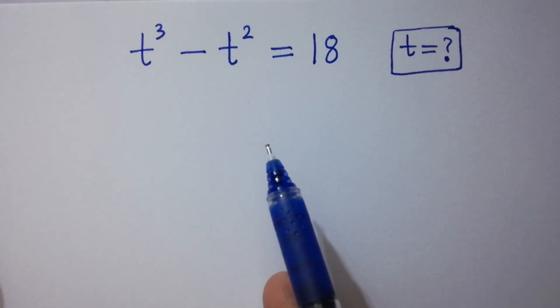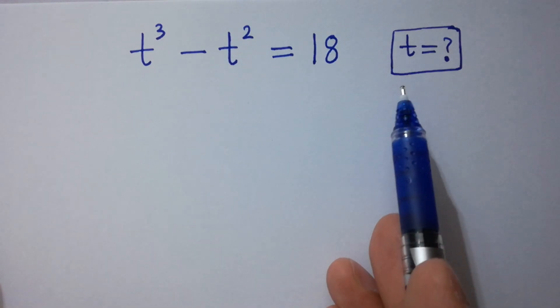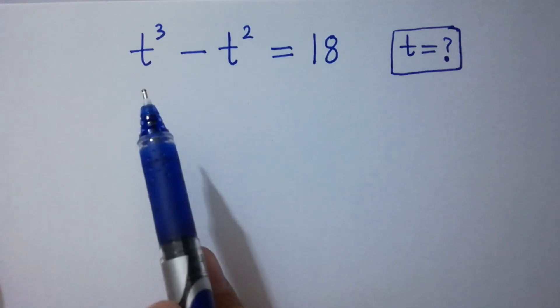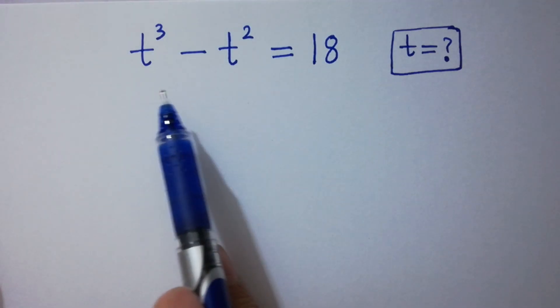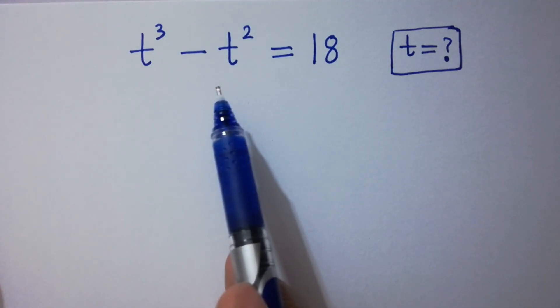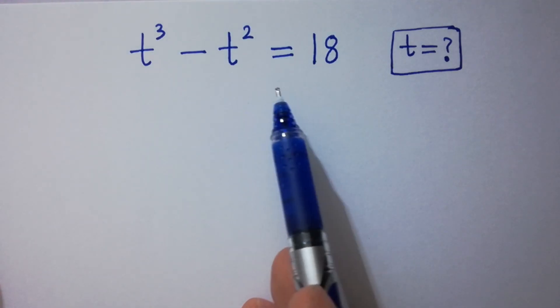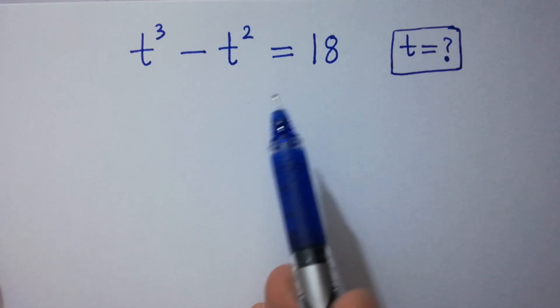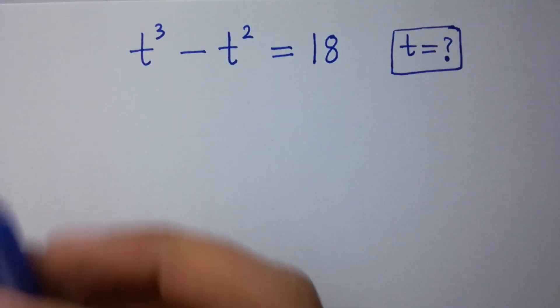Hello friends. Find the value of t if t cube minus t square equal to 18. Let's have a solution.